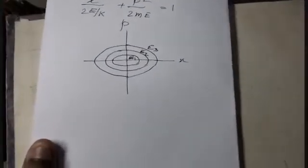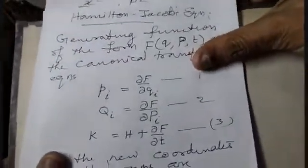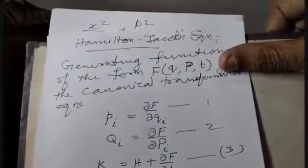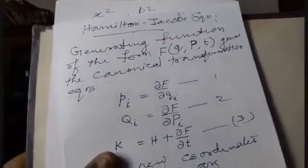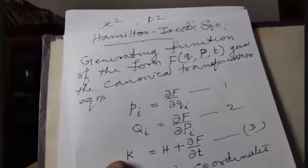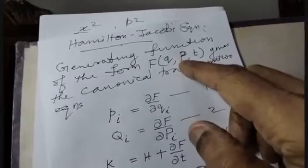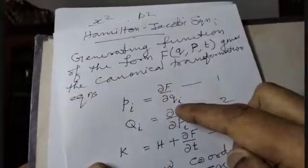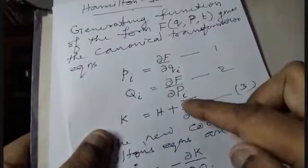This is the Hamilton-Jacobi equation and the Poisson bracket. Hamilton Canonical Transformations. Generating function F of old coordinate Q, new momentum coordinate P, and T. This gives the canonical transformation equations: pi equals ∂F/∂Qi, Qi equals ∂F/∂Pi, K equals H plus ∂F/∂t.